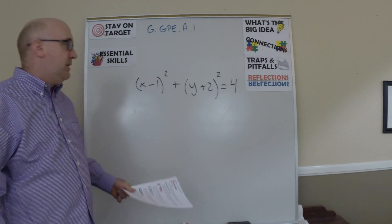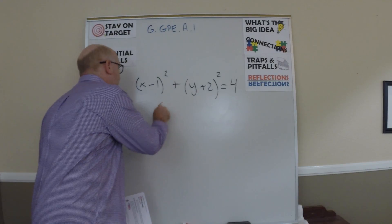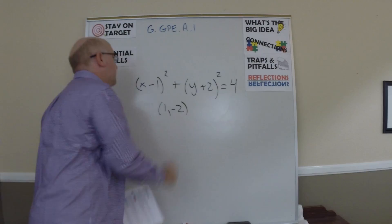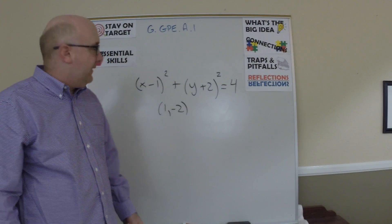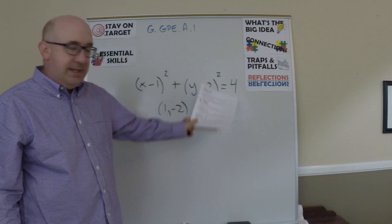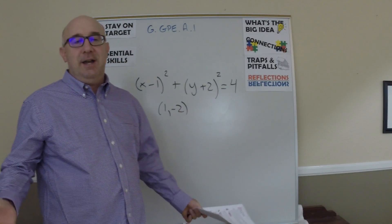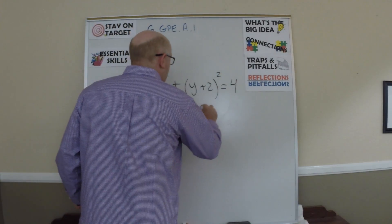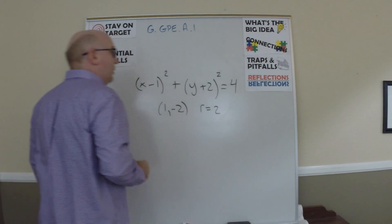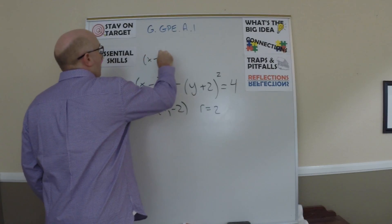The typical errors are that our center is at 1 and negative 2. So it's the opposite of this. That's one error that's typically found. Students will often look at this and think that the radius is 4, but it's actually 2, because that's the square root of 4.